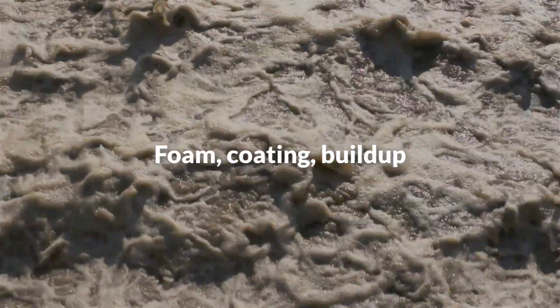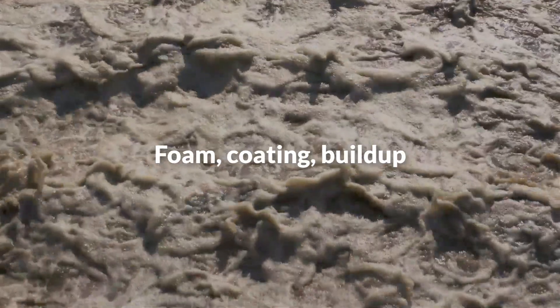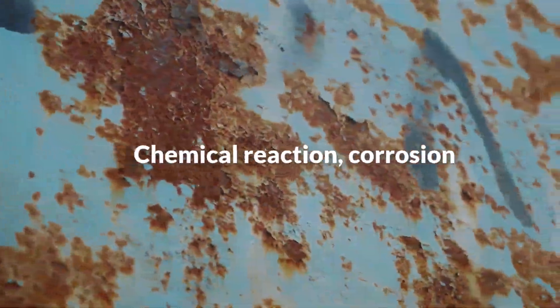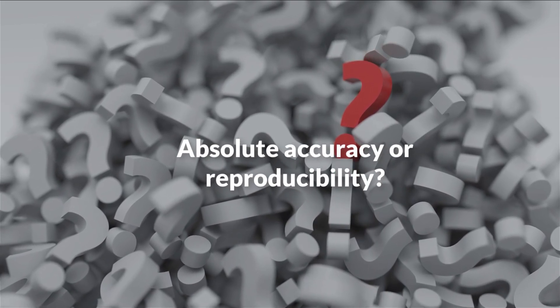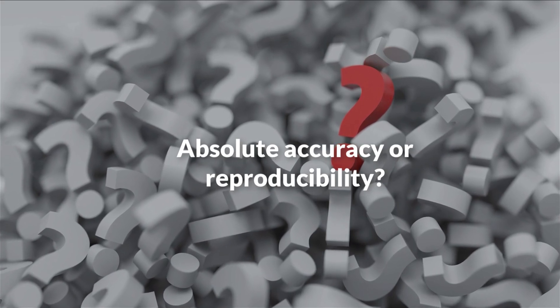Tank contents may include foam that blurs the surface. Foam or fluids may coat, build up, or solidify on the sensor. Fluids may be corrosive or react chemically with sensor materials.